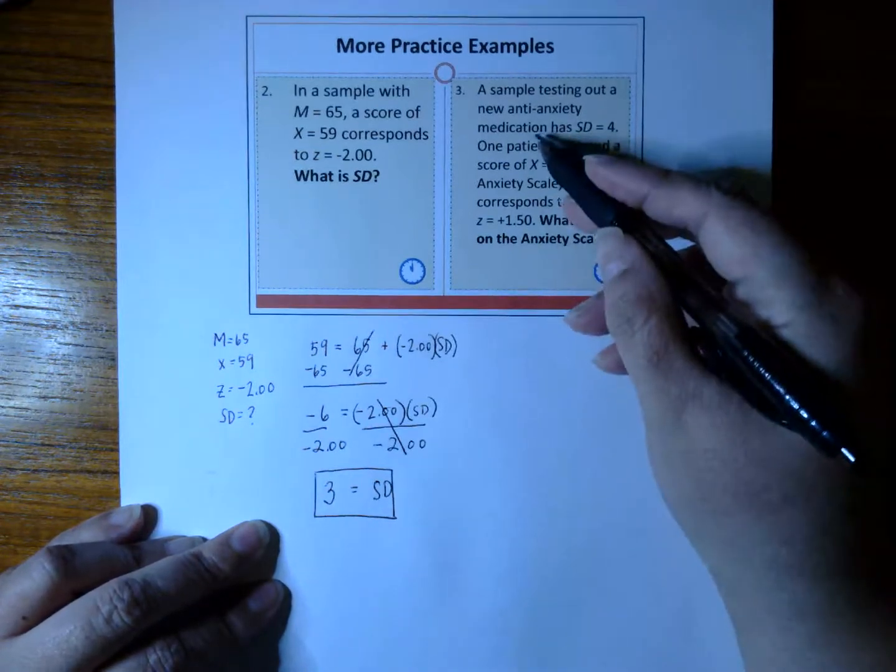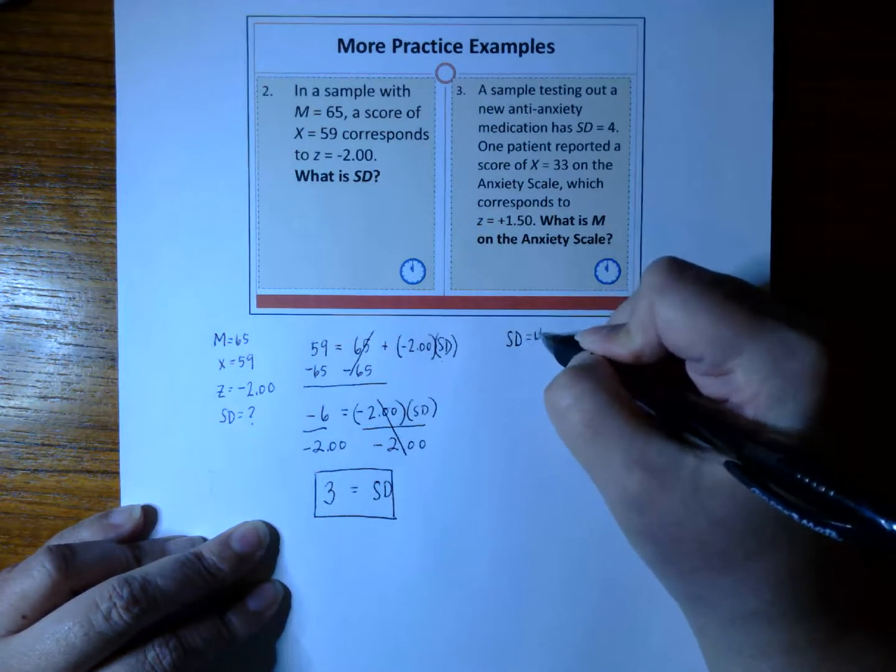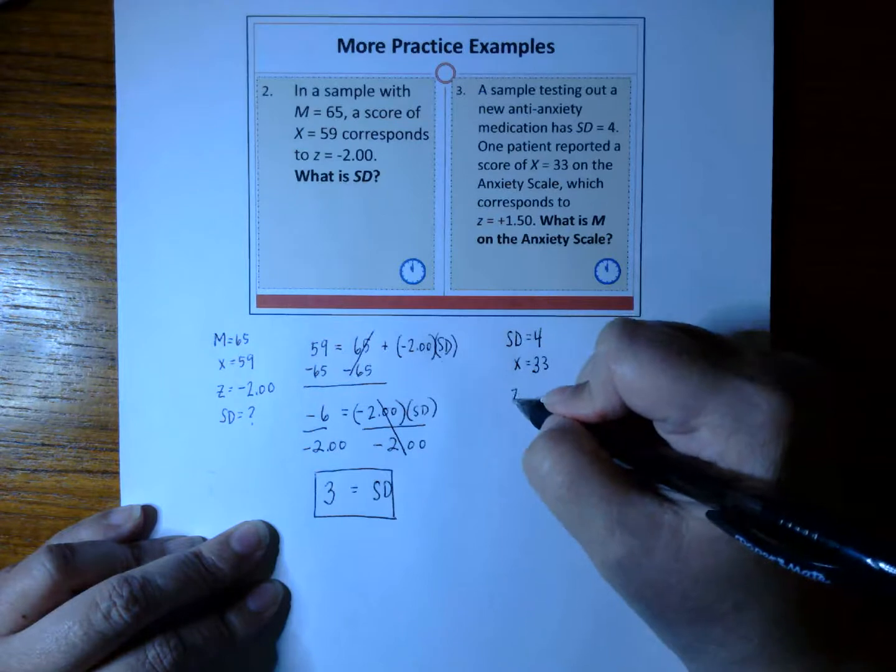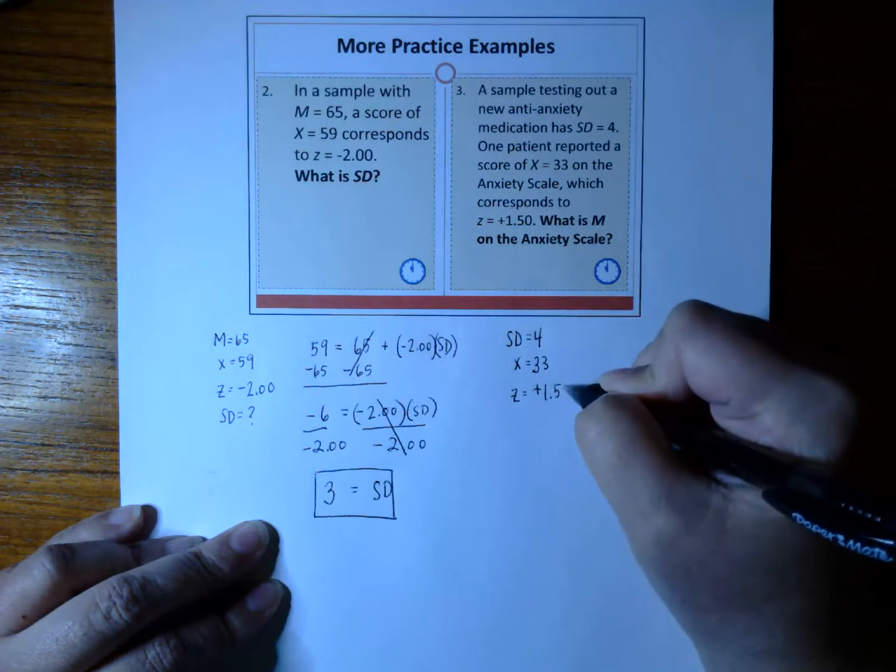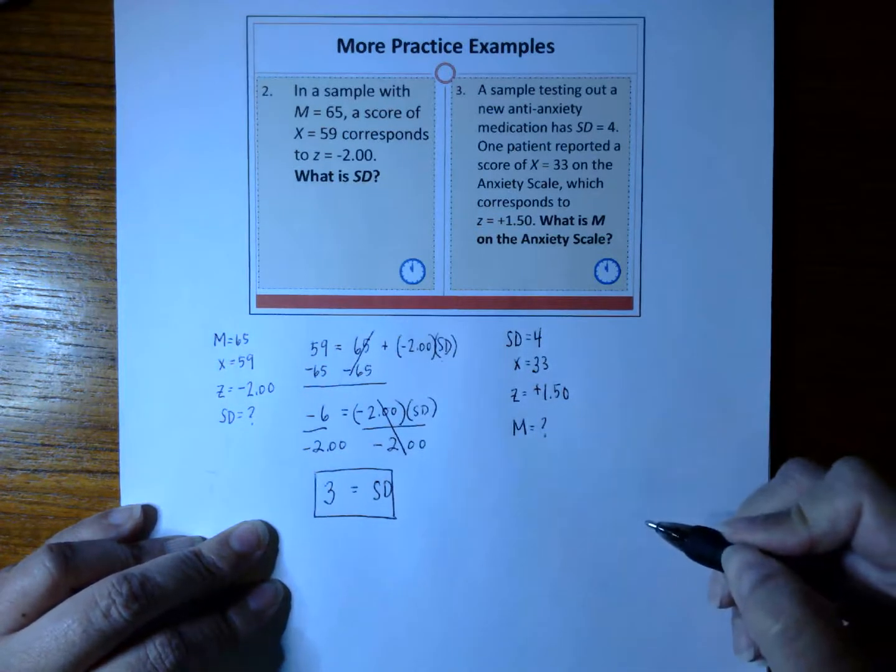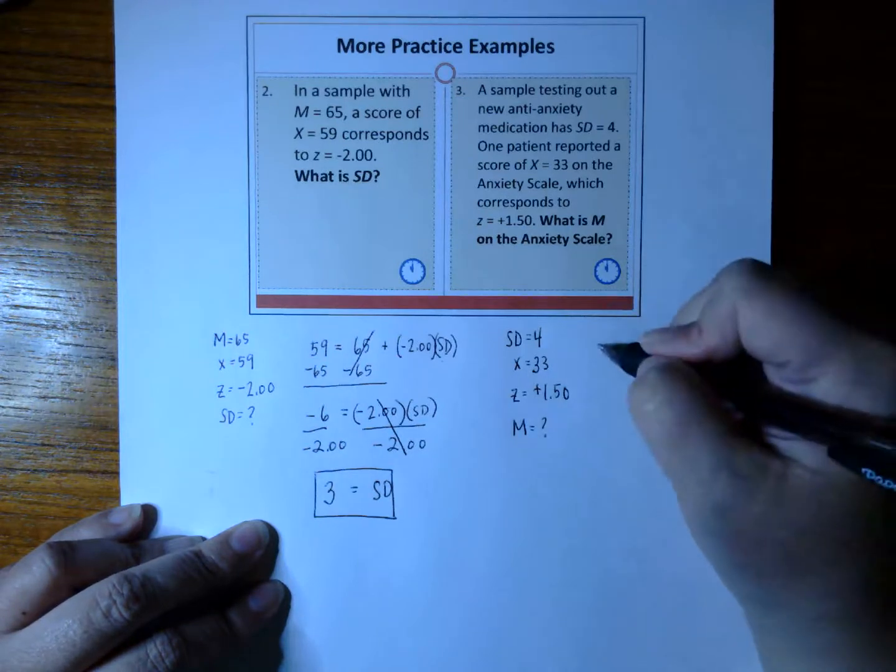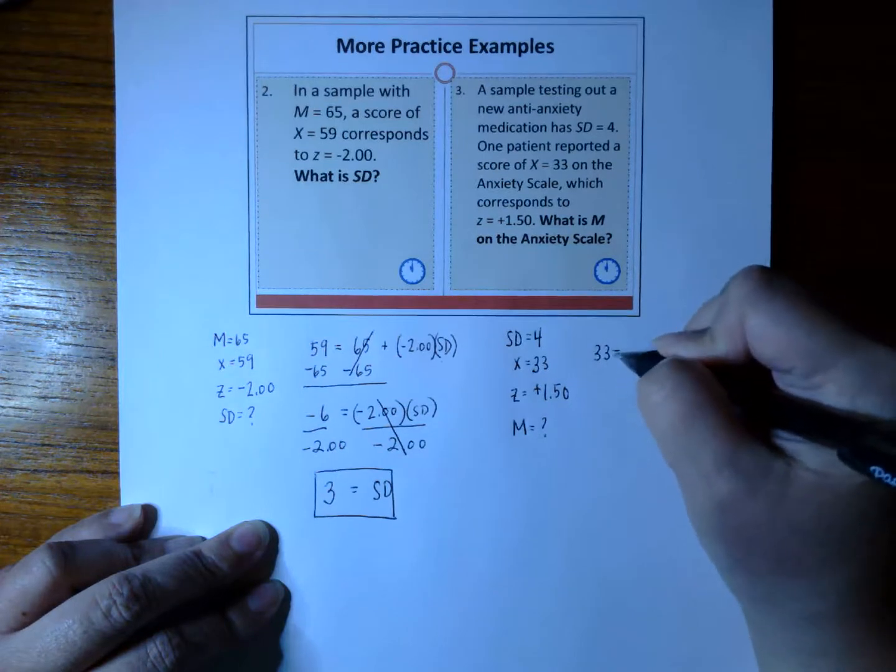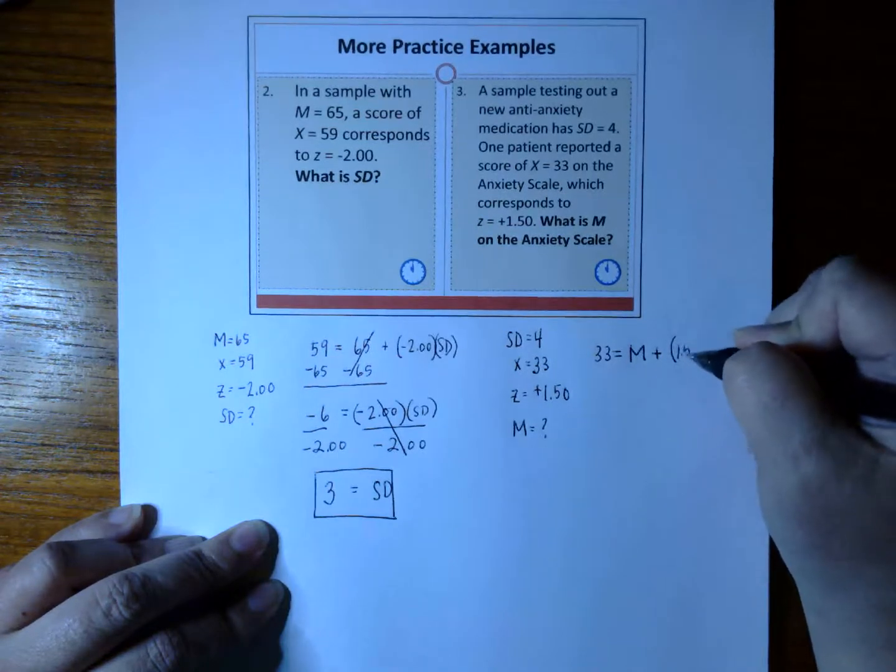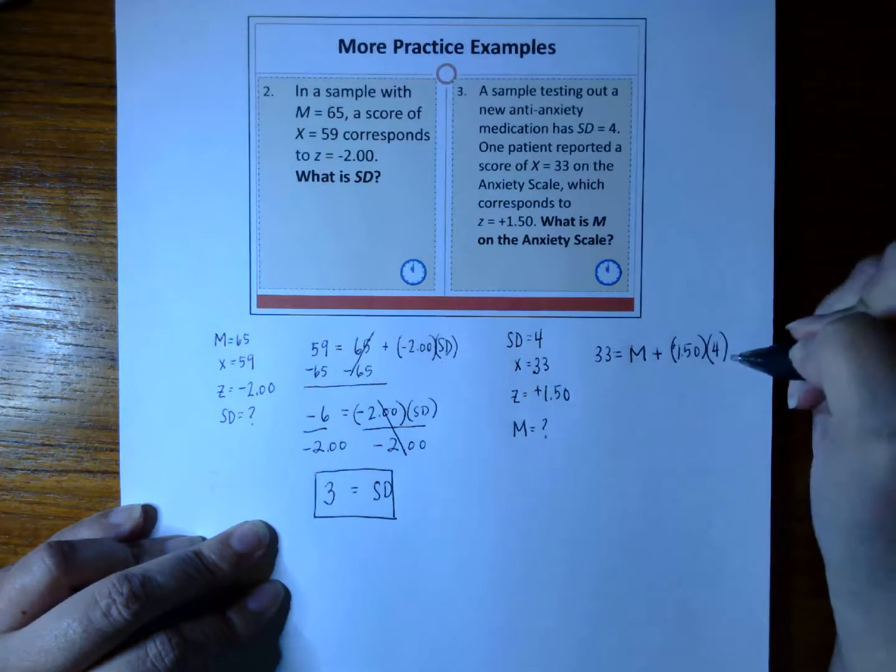Let's go to our next example. What information do we have here? We have SD of 4, and we have an X of 33 that corresponds to a Z of plus 1.50, and they want to know what is the mean on this anxiety scale. Again, same formula as before. X is 33. We don't know the mean, so we just put the mean there. We have a Z of plus 1.5 times our standard deviation of 4.